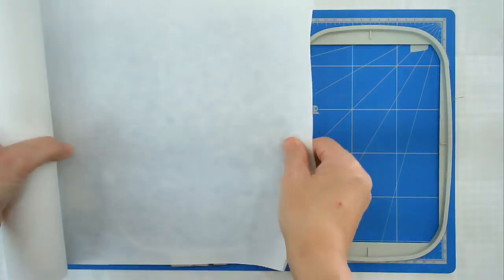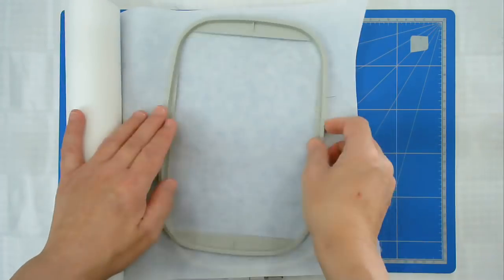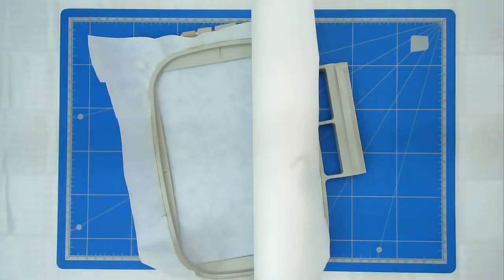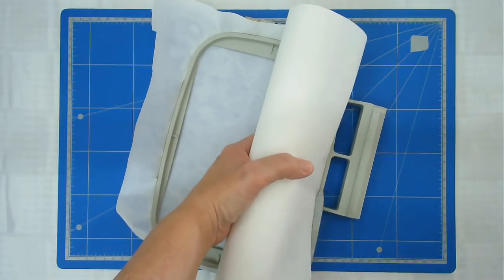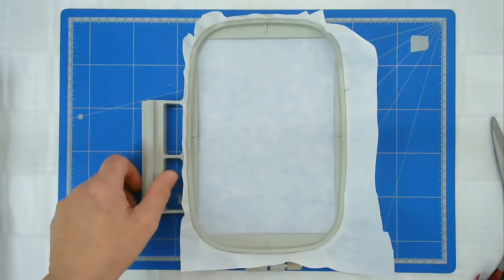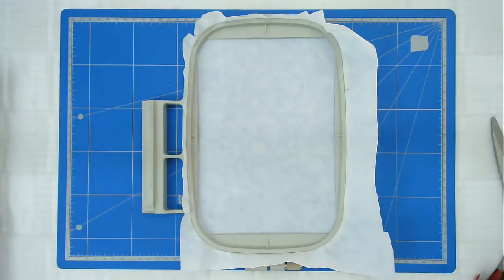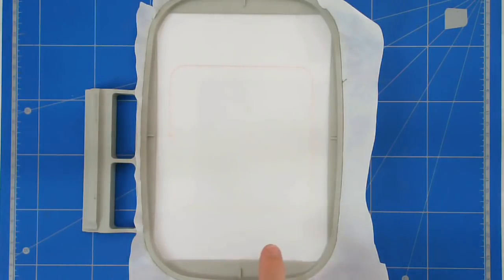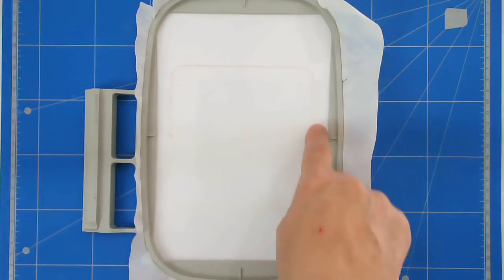I'm going to start off by hooping my stabilizer. I'm now going to pop that into my machine and stitch round number one which is going to provide me with the outline. I've put a piece of paper under here and you can see that's my outline there.